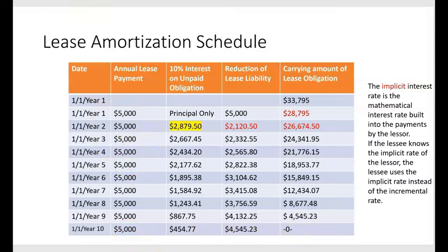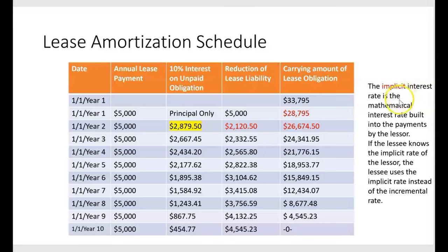Looking at a lease amortization schedule: it starts with a balance of $33,795 and ends with zero after ten payments of exactly $5,000 each. That's ten years of payments totaling $50,000, but the present value of those payments is only $33,795 — because the lessee isn't paying $50,000 all at once today. At a 10% interest rate, the present value is $33,795. That 10% is the implicit rate built into the payments by the lessor.